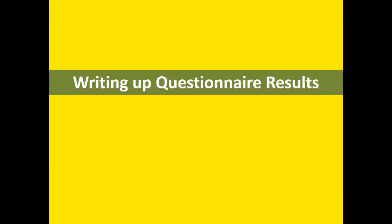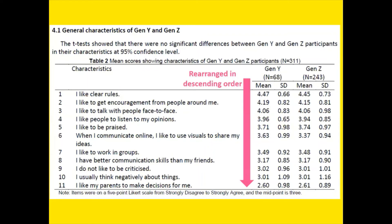Assume you have done all the COUNTIF, totals, means, standard deviations, and percentages — now we write up the results. You have a table under section 4.1: General characteristics of Gen Y and Gen Z. The chi-square test shows no difference, meaning the two groups are comparable. When making a table, you must rearrange the items from highest to lowest mean, as shown by the pink arrow — mean 4.7 all the way down to 2.60. This helps you report results in a more meaningful way.